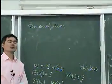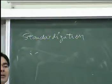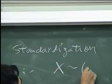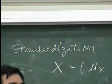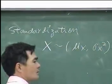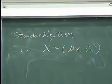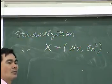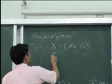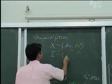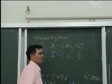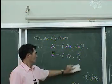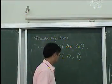Sometimes we want to get rid of mu X and sigma X squared and bring them down to easy numbers. Say X has mean mu X and variance sigma X squared — it is kind of difficult to deal with these numbers. Sometimes we want to boil down to a different variable called Z, and we want Z to have mean 0 and variance 1. This is called the standardization process.